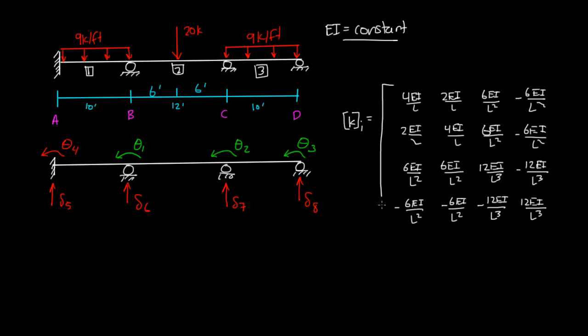This is the matrix we use if we're analyzing 4 degrees of element per element, or 4 degrees of freedom per element. So element 1, which is right here, has theta 4, theta 1, delta 5, delta 6. That's 4 degrees of freedom, so we use this 4 by 4 matrix. This is given.